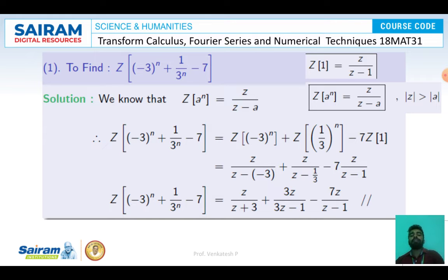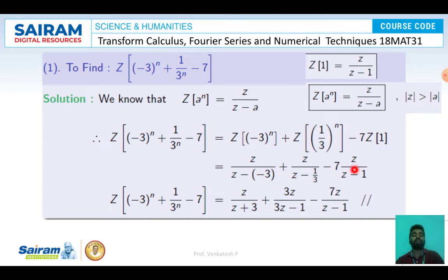Expanding the equation, we get Z{-3^N} + Z{(1/3)^N} - 7·Z{1}. Replacing A = -3 in the Z{A^N} formula gives Z/(Z+3). Replacing A = 1/3 gives Z/(Z - 1/3), which simplifies to 3Z/(3Z-1). Therefore, Z{-3^(N+1) + (1/3)^N - 7} = Z/(Z+3) + 3Z/(3Z-1) - 7Z/(Z-1).